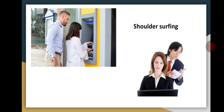These are examples of shoulder surfing. In the left image, a woman is withdrawing money by entering her ATM PIN while a person behind her is looking at it. On the right side, a lady is logging into a system and a person behind her is looking at her password and user ID — this method is called shoulder surfing.